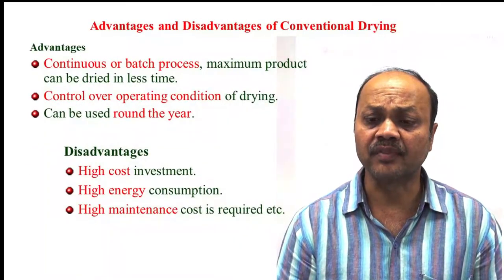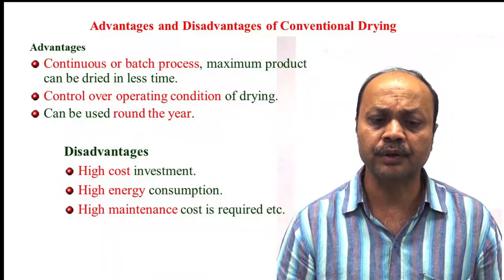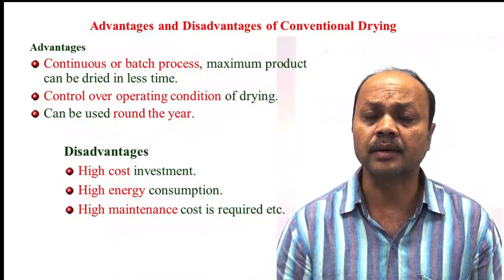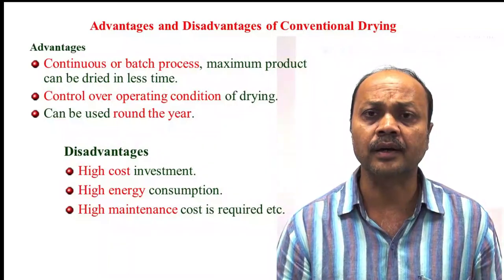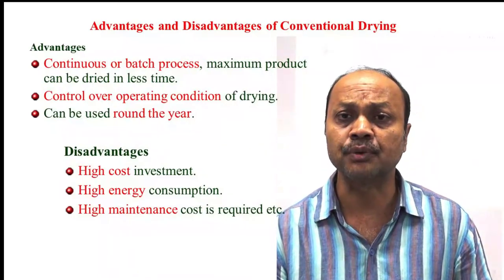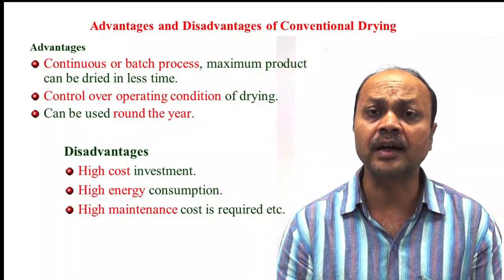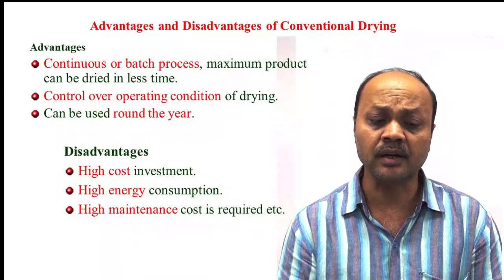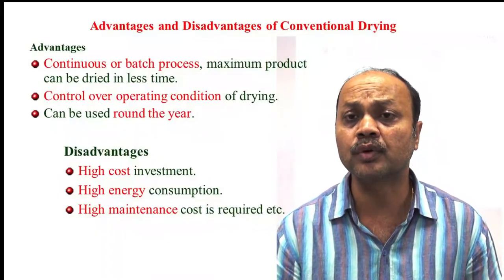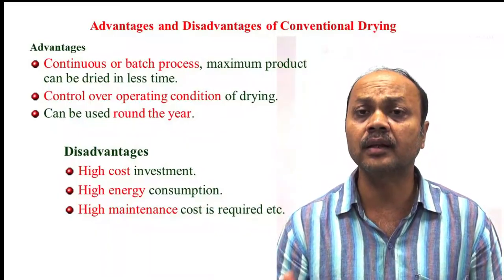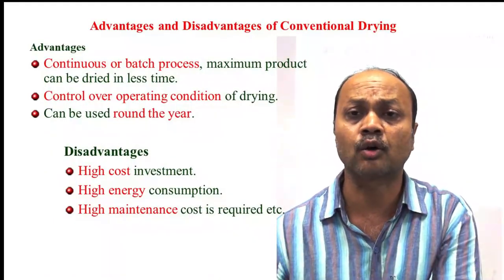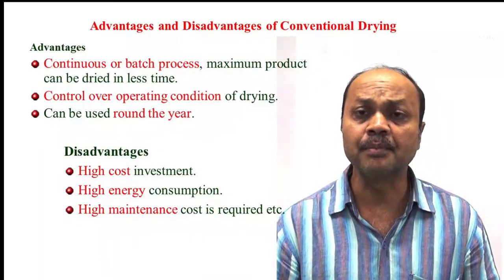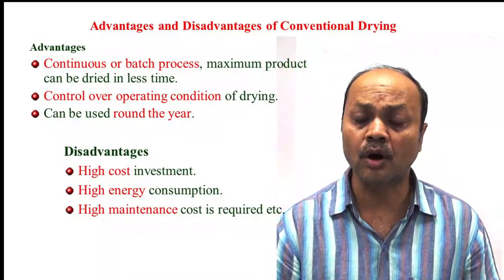What are the advantages and disadvantages of conventional drying? The advantages: it can be a continuous or batch process; it does not depend upon the outside environment; you can operate throughout the year; capacity is higher — as much as we need; and the operating conditions — all drying parameters — can be controlled easily. The disadvantages include high cost, because there are two things: the initial cost to put the dryer, and the operating energy cost. Apart from that, high investment cost, energy consumption, and high maintenance cost are the main disadvantages of conventional drying.